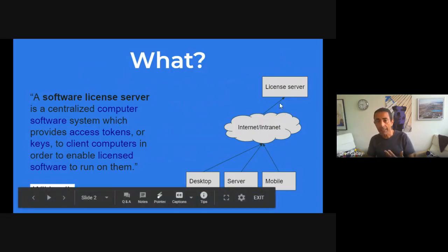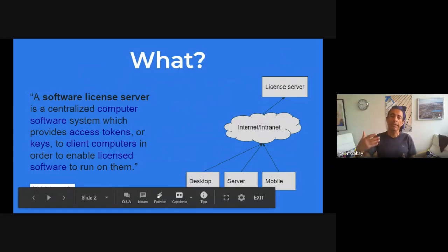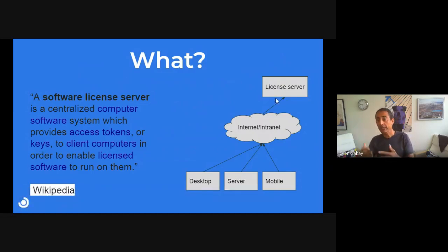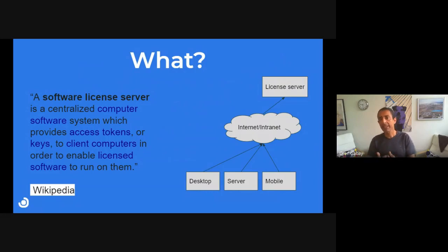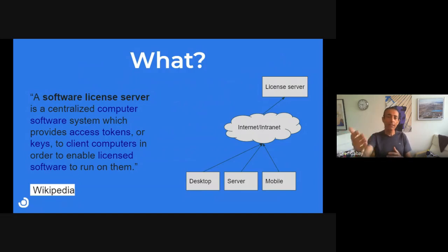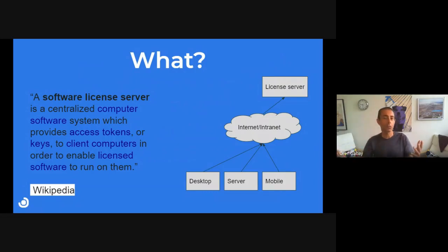The client software — might be desktop, server, mobile, whatever client software — can access the license server through the internet and ask for the key. If the software gets the key, then the software can run on the client computer. The license server provides the entitlement and is typically measuring the usage.